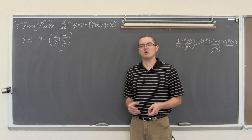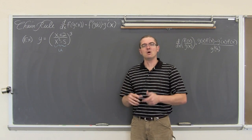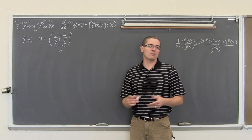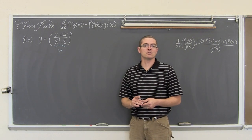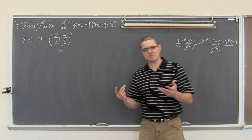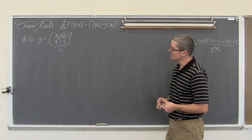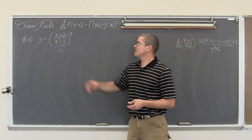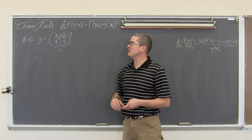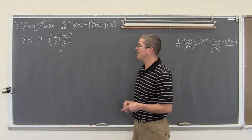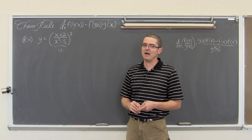Then we are going to move into a whole other video — or two videos maybe — where we do the chain rule involving trigonometry functions. So we have y equals x plus 2 over x squared minus 5, raised to the third power.